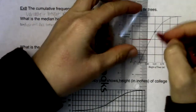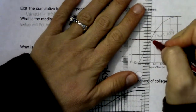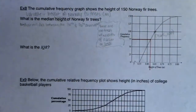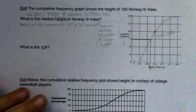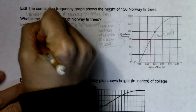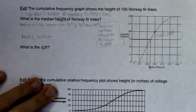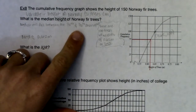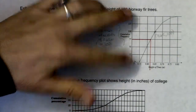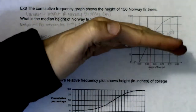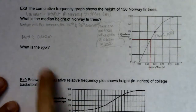Dropping down from y = 75, the median height looks to be around 0.62 meters. You don't even need to calculate that half of 150 is between the 75th and 76th observation — graphically, just go halfway up the y-axis and that's your median. Your median is always halfway up a cumulative graph.